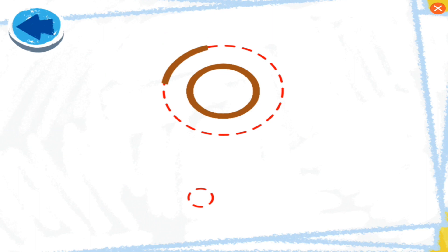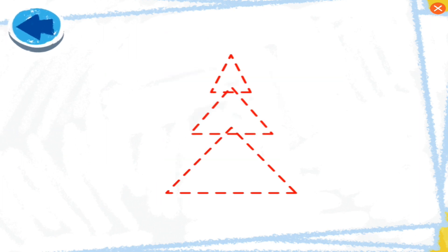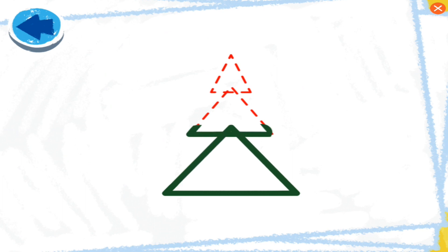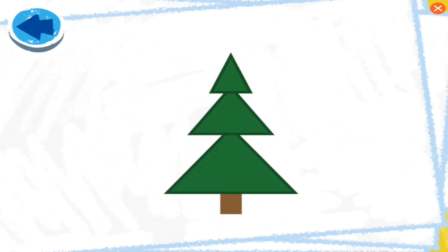This picture has circles! Boy, Elmo wonders what it is! This picture has triangles! Boy, Elmo wonders what it is! Cool! That's a pine tree!